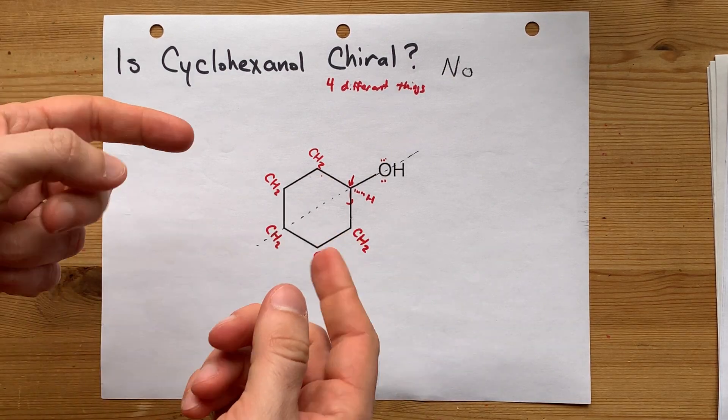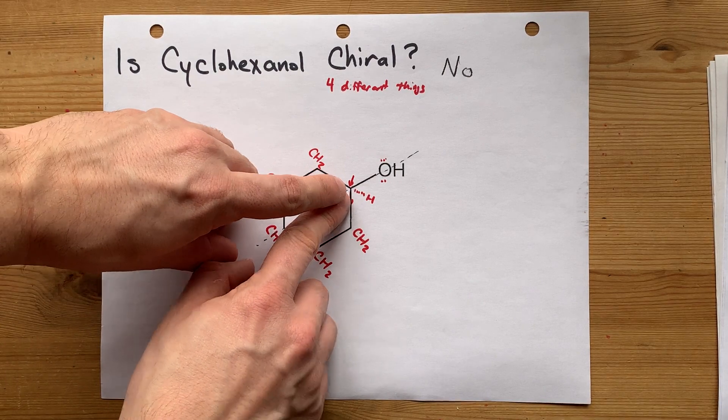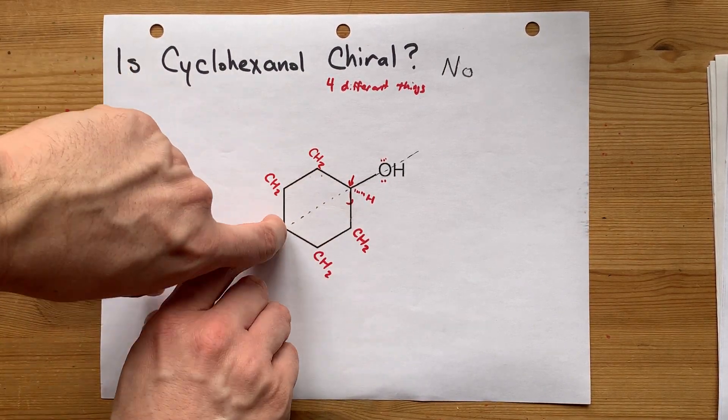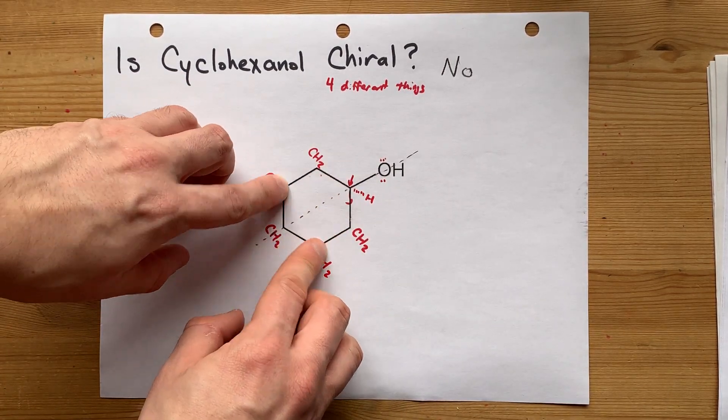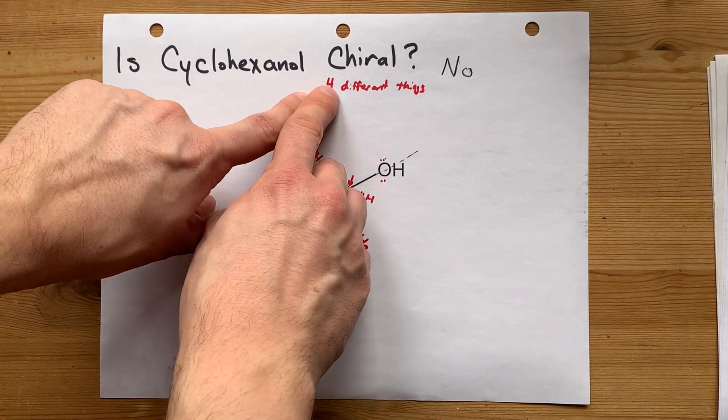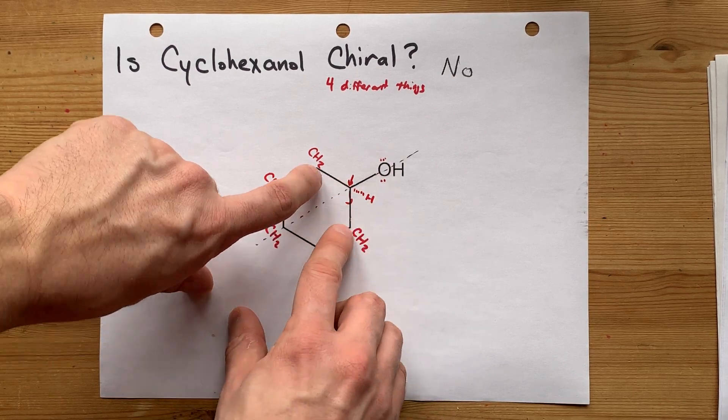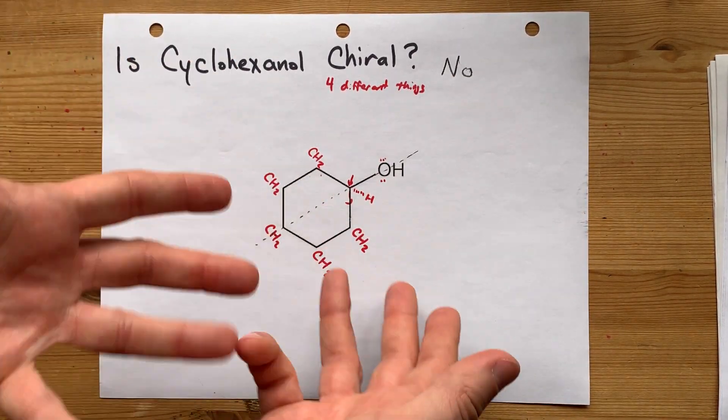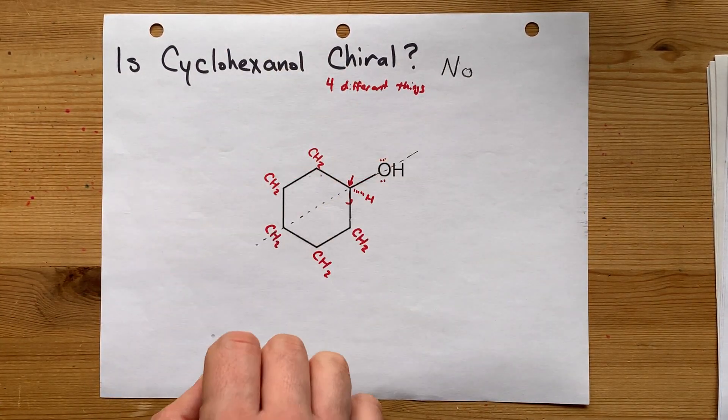That's the exact same thing in both directions, even though you were going in a different direction. From here, CH2, CH2, CH2, CH2, CH2, and back on itself. Those are exactly the same thing, and therefore this is not four different things all connected to the same carbon. It's an OH, an H, and then five CH2s connected to each other. Those are exactly the same. This is not a chiral molecule.